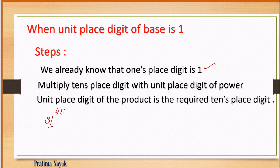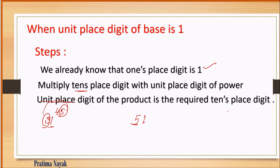The procedure is: multiply the 10th place digit of the base with the unit place digit of the power. The unit place digit of that product becomes the 10th place digit of the answer. For example, take 31 to the power 45. The unit place digit is always 1. For the 10th place, we multiply 3 by 5, giving 15. The unit digit of 15 is 5, so 5 goes in the 10th place.